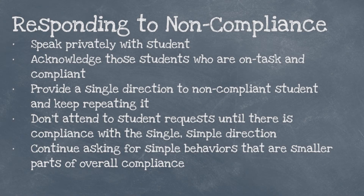When students are noncompliant, responses should be done privately as much as possible so as not to provide undue attention or distract other students. It is important to continue acknowledging students who are on task. Noncompliant students should be addressed with a single direction — tell them exactly what you need to see from them. These students often have reasons why it's not possible, but we should be a broken record and keep repeating the direction. In the end, the student either complies and receives a nod of thanks, or does not and receives the standard consequence.